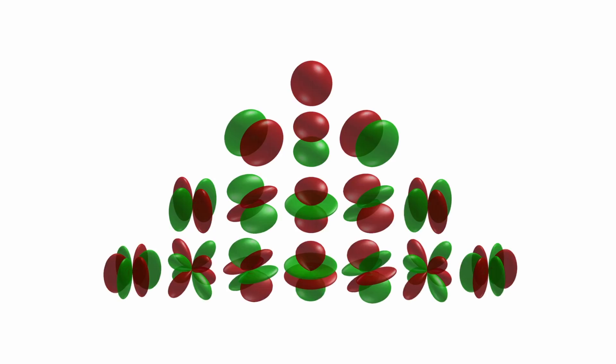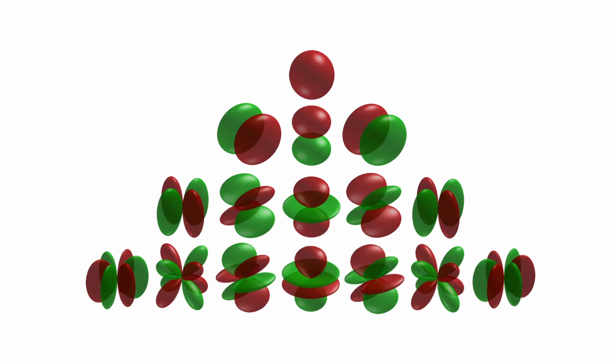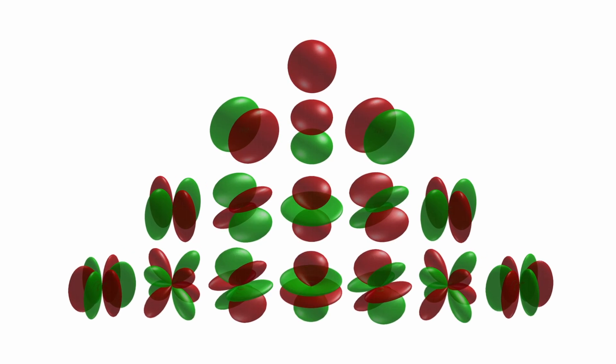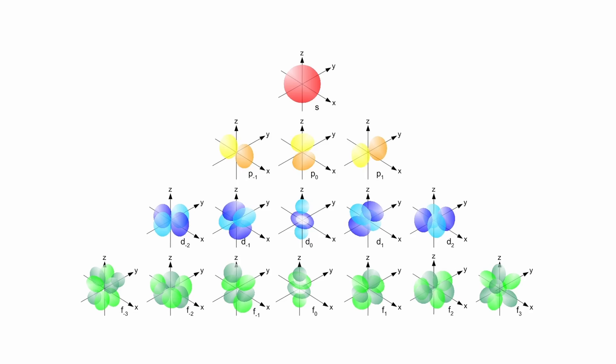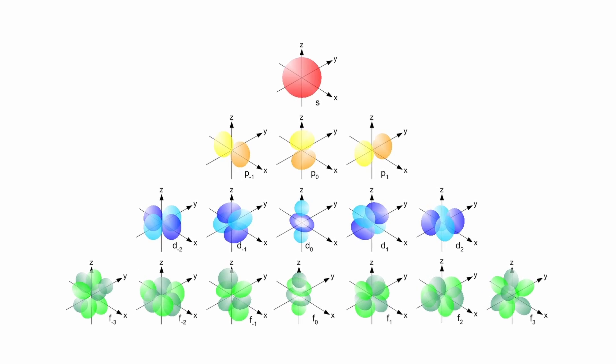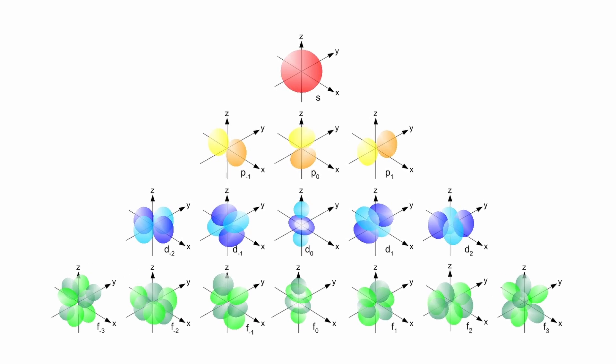Now let's look at visual representations of the electrons. We treat electrons as waves using spherical harmonics to predict the behavior of electrons. The accepted model of electron orbital structures uses spherical harmonics tweaked with the Schrödinger equation, and this is how the electron orbital structures look like.